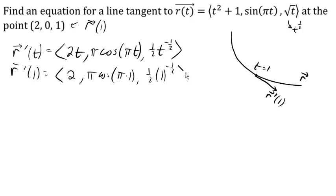So evaluating this, cosine of pi is negative 1. So we get negative pi for the y component. 1 to the negative 1 half is just 1. So we get 1 half for the z component. And so that is the tangent vector at the point t equals 1.